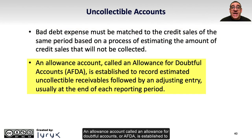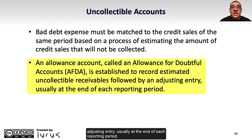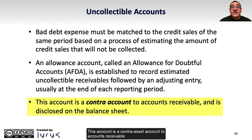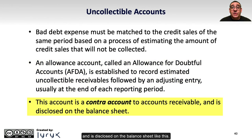An allowance account, called an Allowance for Doubtful Accounts, or AFDA, is established to record estimated uncollectible receivables, followed by an adjusting entry, usually at the end of each reporting period. This account is a contra-asset account to accounts receivable and is disclosed on the balance sheet.